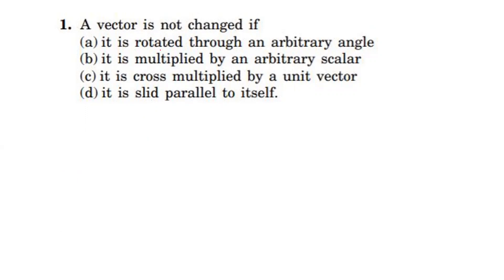Looking at the first option: the vector is rotated through an arbitrary angle. Suppose we take a vector in this direction — if this vector is rotated by some angle, then the direction changes, so that vector changes. Second option: the vector is multiplied by an arbitrary scalar. Let us assume a velocity vector equal to 2 meter per second.